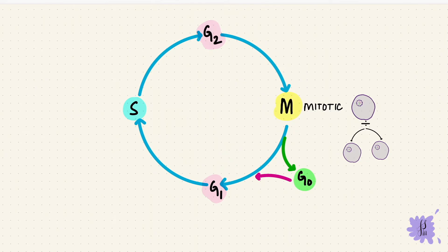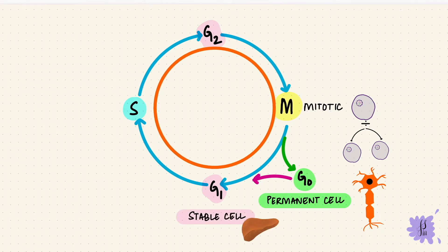But if the cell stays in the G0 phase permanently, then it's called a permanent cell. This is like nerve cells, so they don't enter the cycle again. A cell that goes into the G0 phase, but when triggered can enter the G1 phase, go through the cycle, and divide again, that is a stable cell, like liver cells or hepatocytes. Some cells don't bother with the G0 phase. They just keep dividing. This is like cells of the skin and hair. These are called labile cells. So there are permanent, stable, and labile cells.